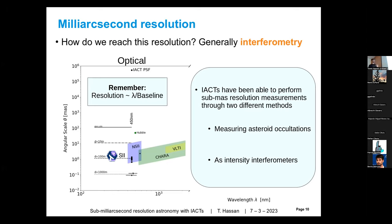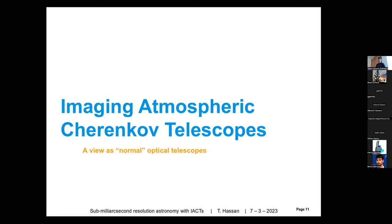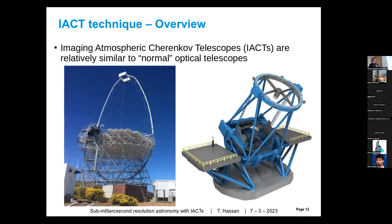First I'll introduce what Cherenkov telescopes are, seen as an optical astronomer. Here is a picture of the first large-sized telescope prototype, LST-1. You can see the structure — the big reflecting dish, the arc holding the camera — is really not that different from, say, the Subaru telescope. I'm specifically using Subaru because it has a slot for a camera at the primary focus.